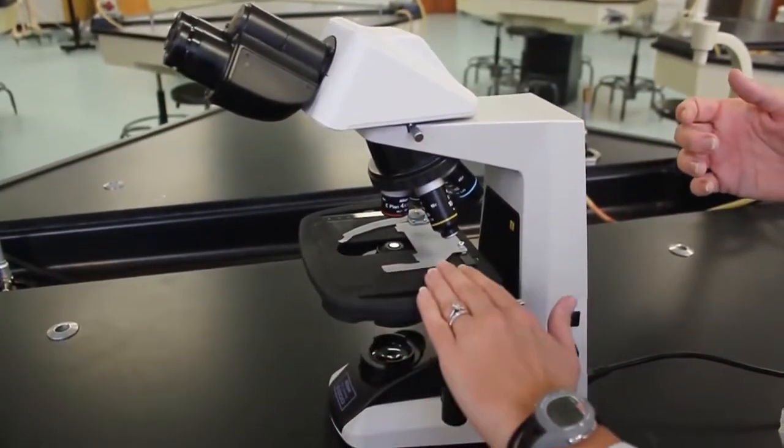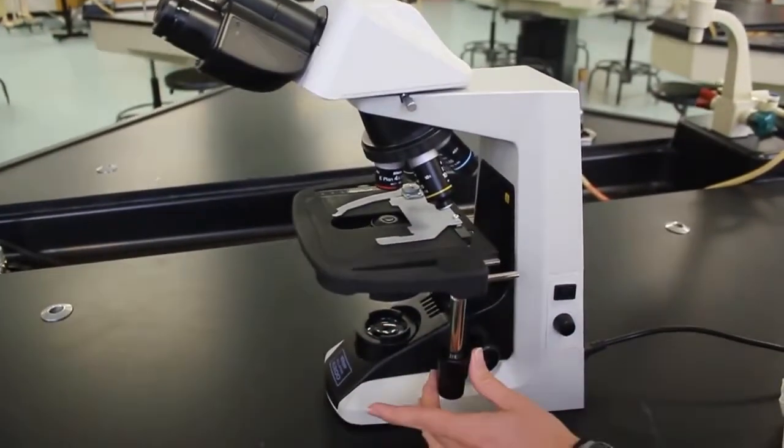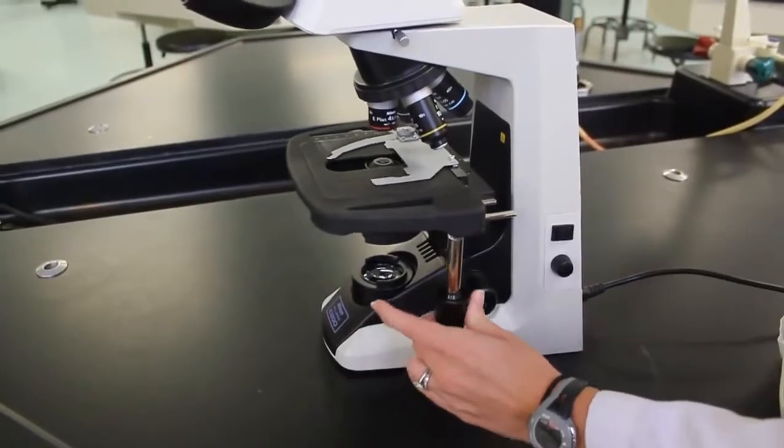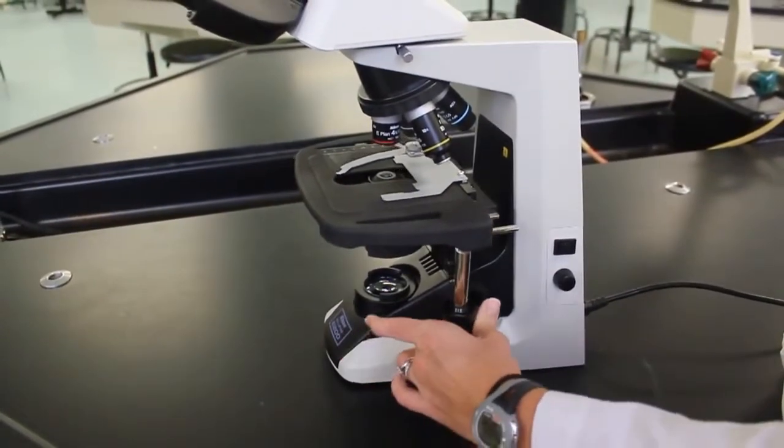This area is the stage. This is where the microscope slide is placed. These knobs allow you to move the stage to get your microscope slide in the proper orientation.